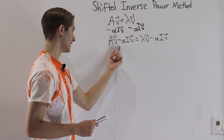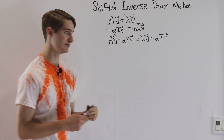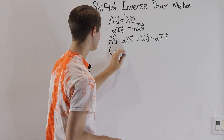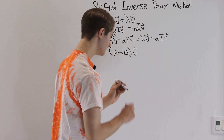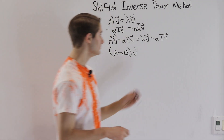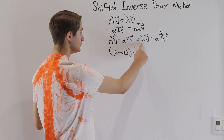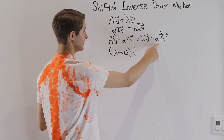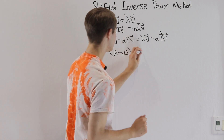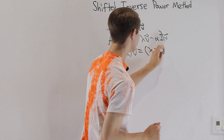On the left side we have two matrices that are both multiplied by the vector v, so we can factor that out to get (A minus alpha I) times v. On the right side, remember that the identity doesn't do anything, so we can ignore that. We have two different constants both multiplied by v, so we can factor that out to get (lambda minus alpha) times v.